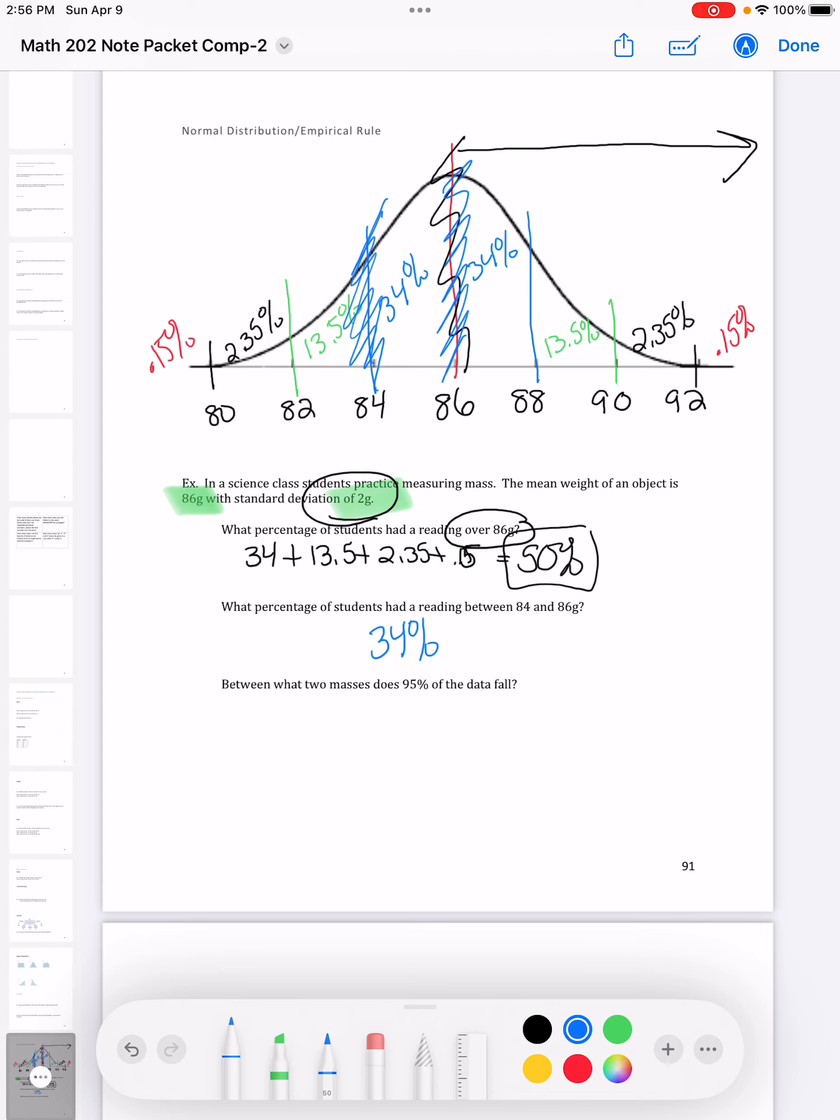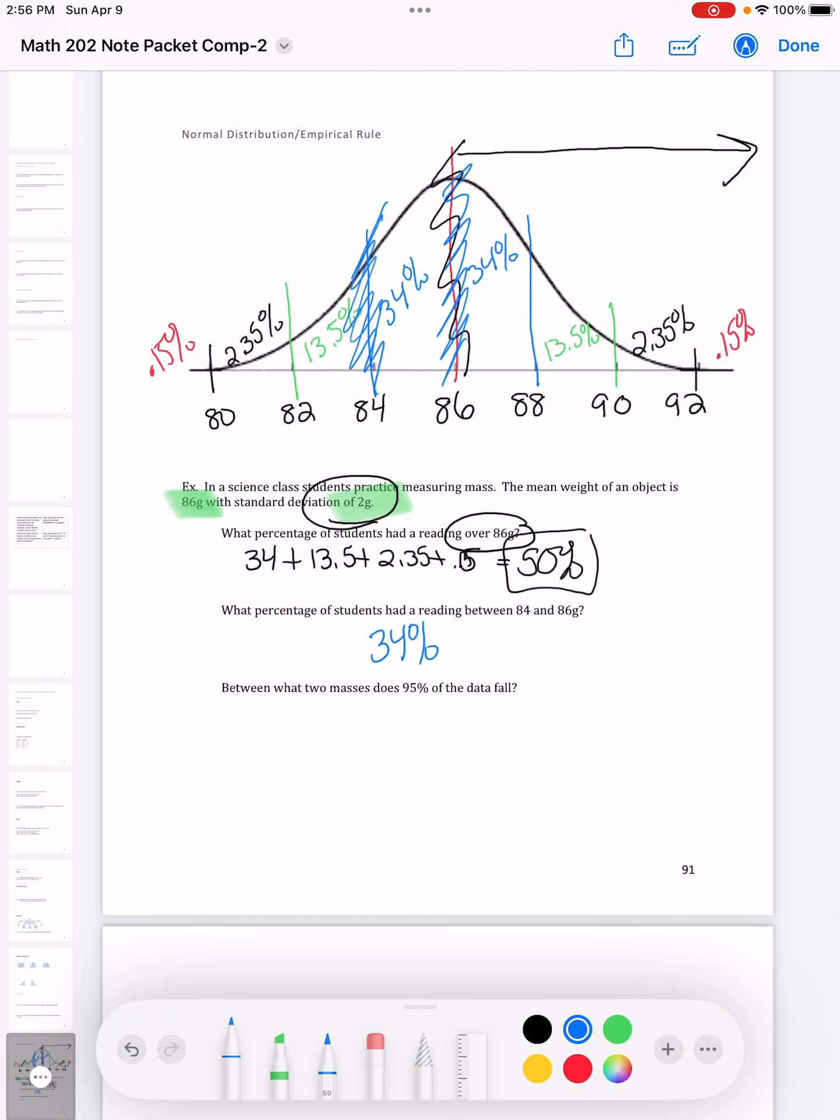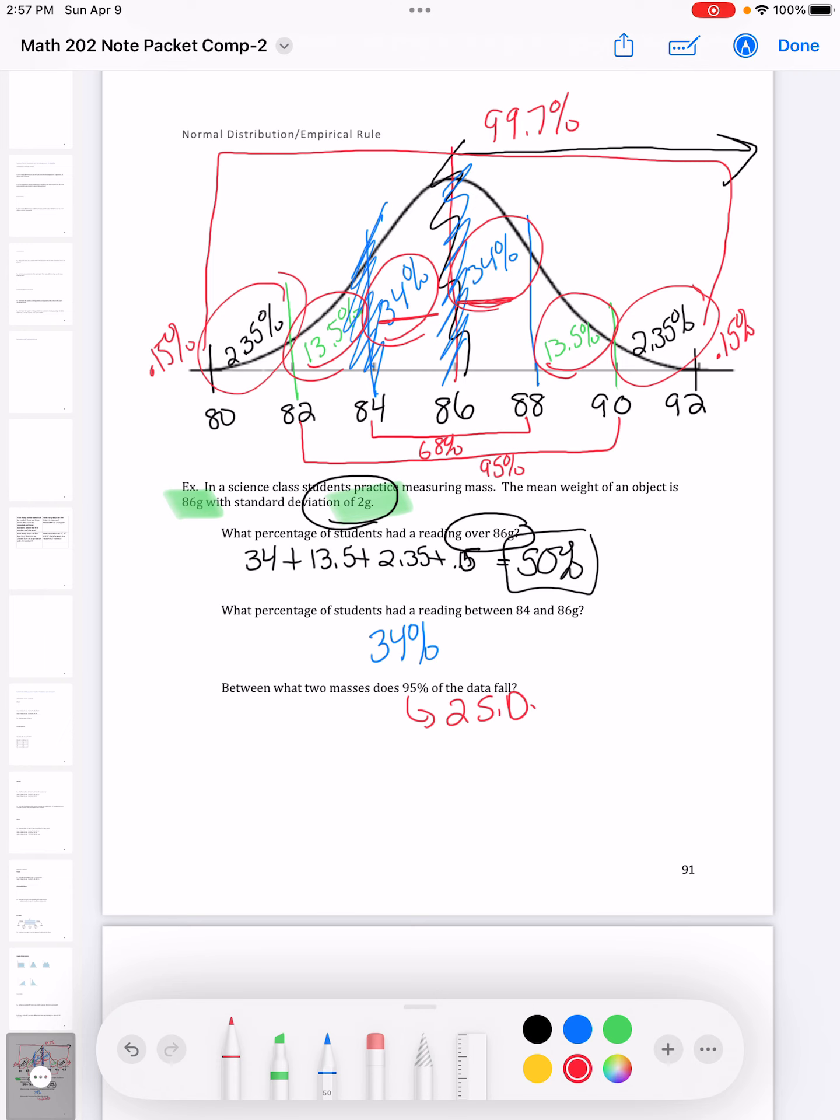Now the second one is kind of a little funky. It wants to know between what two masses does 98% of the data fall. So I'm going to give you two different ways to think about this. One way is one standard deviation is always 68%. Two standard deviations, if I were to add all of this together, it's going to give me 95%. Three standard deviations is going to be 99.7%. And just like before, the percents always stay the same. So those are rules. So 95% is the same thing as two of my standard deviations. So that would be between 82 and 90.